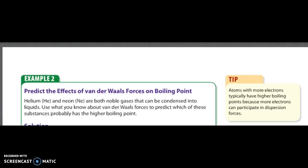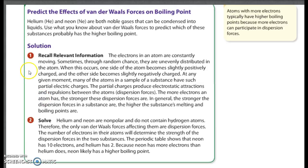Predict the effects of Van der Waals forces on boiling point. Tip, atoms with more electrons typically have higher boiling points because more electrons can participate in dispersion forces. Helium and neon are both noble gases that can be condensed into liquids, so by pressurizing. Use what you know about Van der Waals forces to predict which of these substances probably has a higher boiling point. And just as a reminder, even though we always think of helium and neon not as reacting, we're not talking about reacting. We're talking about the boiling point. And the electrons are still moving, even though it has a full outer shell. So you still have the dispersion forces.